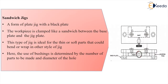Next we have the sandwich jig. Here the part is sandwiched between two plates with locating pins. This is a form of plate jig with a back plate — the workpiece is clamped like a sandwich between the base plate and the jig plate. Here are the bushes from where the tool is guided. This type of jig is ideal for thin or soft parts that could bend or warp in other styles of jig. The use of bushings is determined by the number of parts to be made and the diameter of the hole.